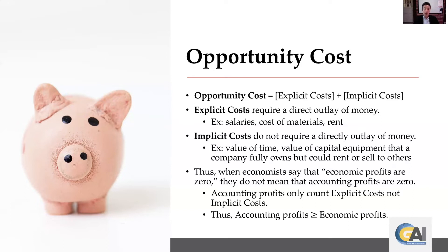When economists say economic profits are zero, it's something quite different from when an accountant says profits are zero. An accountant looks at explicit costs only; economists look at both explicit and implicit costs — the full opportunity cost. So accounting profits will be greater than or equal to economic profits. A lot of models assume profits equal zero, but that's actually a pretty good situation — it means all factors of production are getting their full return relative to an alternative, so everyone's getting their full opportunity cost.